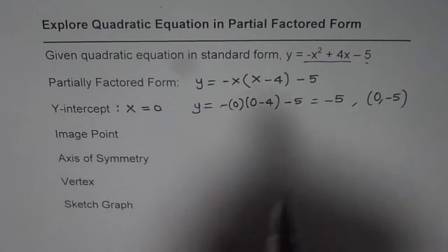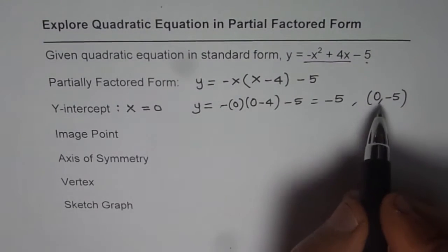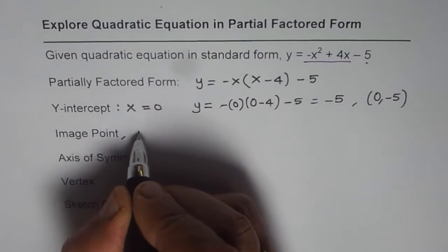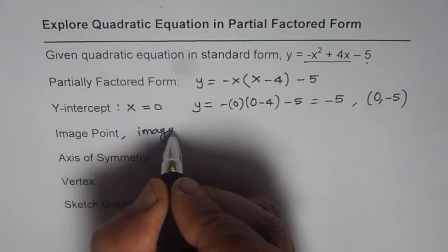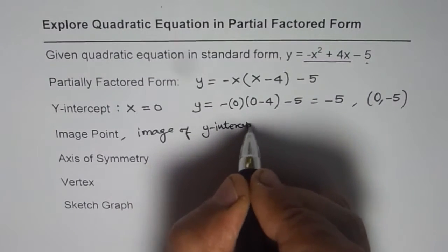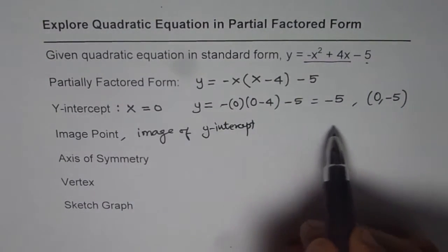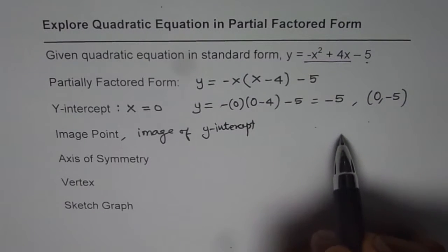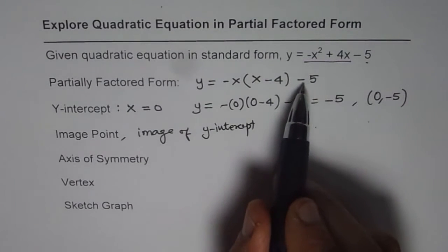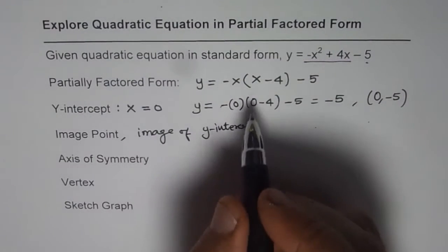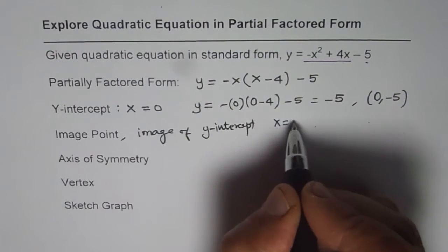Image point is the point which is the image of y-intercept. This is in order to get two points horizontally placed. So that once we know these two points, the midway is the axis of symmetry. That is the strategy. Now you get the same value, minus 5, when x equals 4. The image point should be at x equals 4.